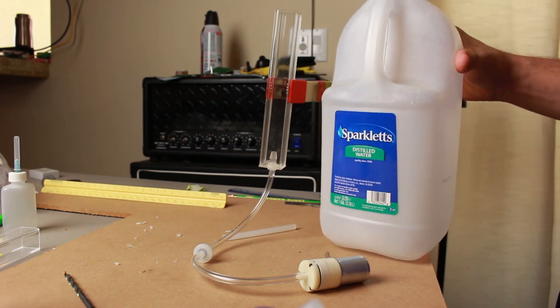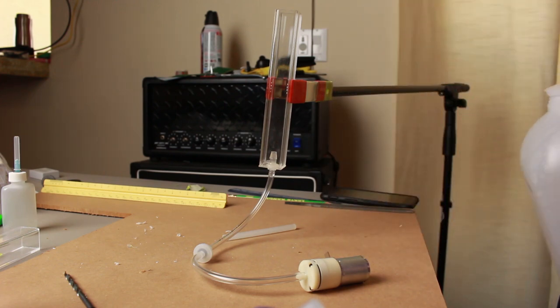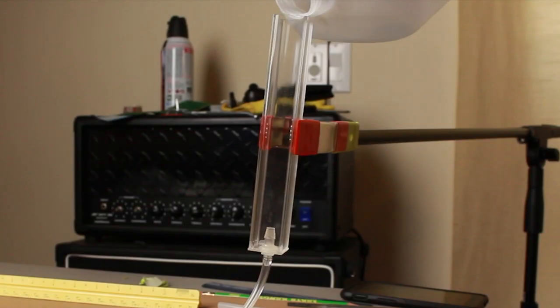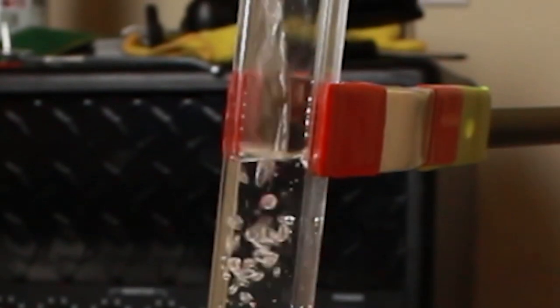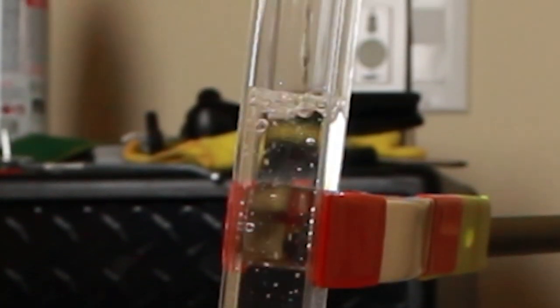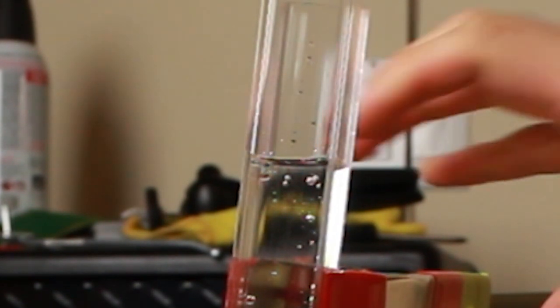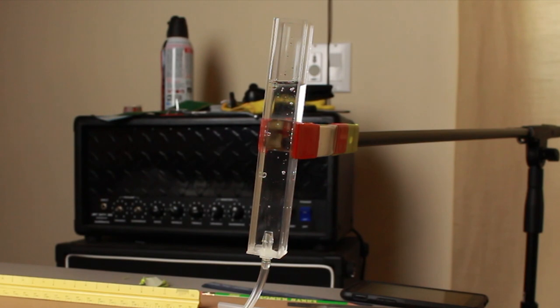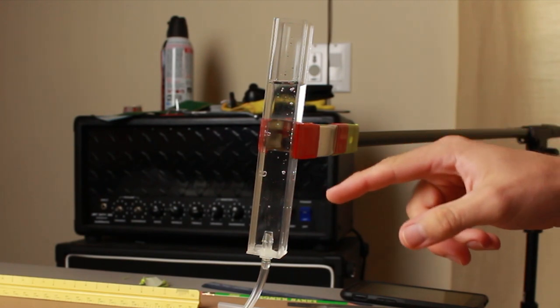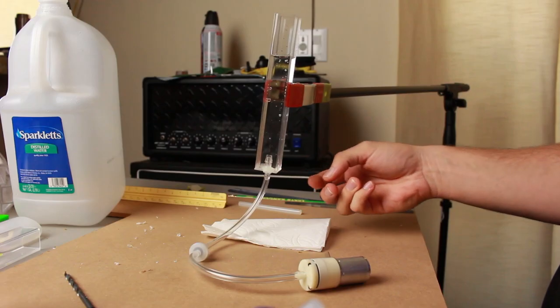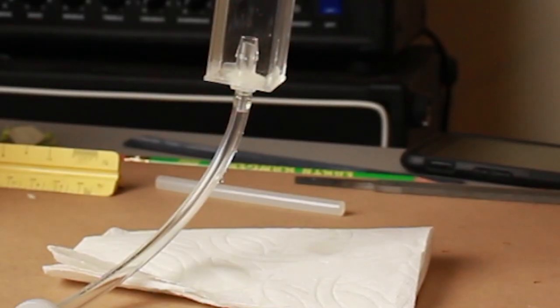For this next part, I'm going to be filling the tube with distilled water. Hopefully, there's no leaks. That's probably good. It doesn't need to be all the way. Remember that air takes up space as well, so we don't want to push the water out. Okay, it looks like we got a little bit of a leak, and it looks like it's coming from underneath, so I'm going to have to patch that.